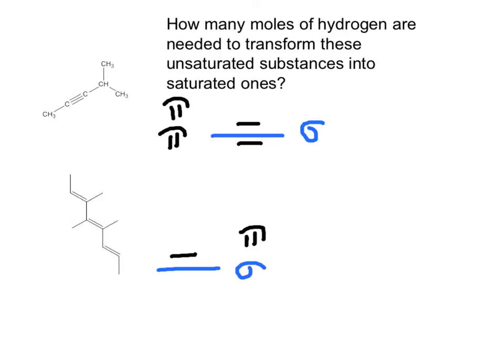How many moles of hydrogen are needed to transform these unsaturated compounds into saturated ones? Saturated means we will have only single bonds. First, explore what type of bond is present: an alkyne is made out of one sigma bond and two pi bonds. A triene has three pi bonds. The number of moles needed will be two moles of hydrogen for the alkyne, and three moles of hydrogen for the triene.